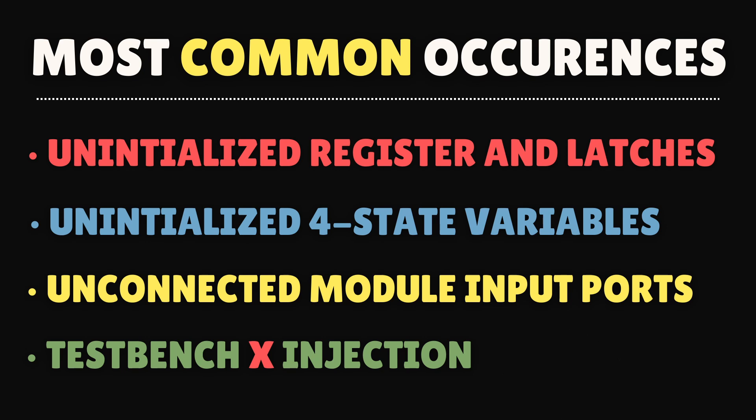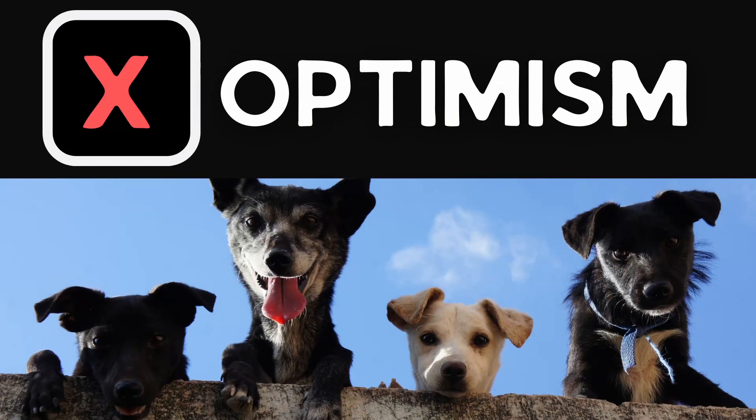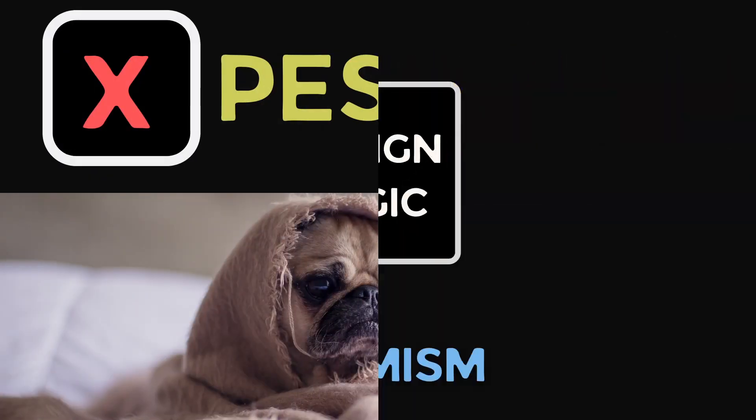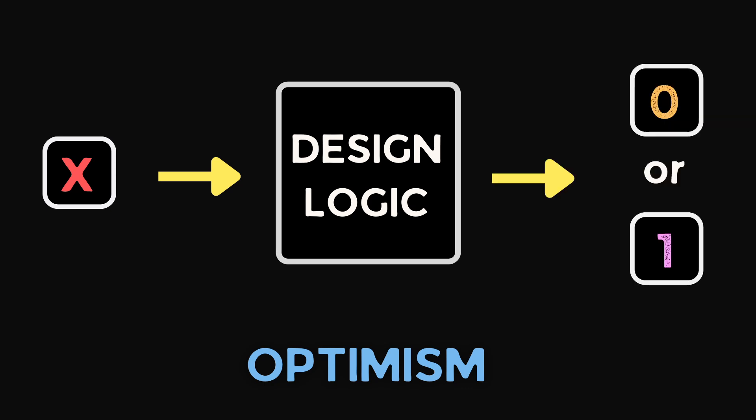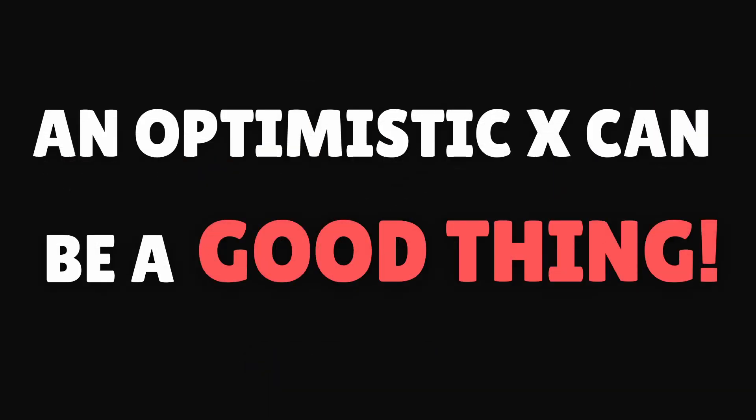So now our main concern is how the X value will propagate through the digital logic in RTL, whether it's optimistic way or pessimistic way. In simulation, X optimism is considered as when there is some uncertainty at input in design or logic, the simulation comes up with a known result 0 or 1 instead of X. An optimistic X can be a good thing. It can accurately represent a silicon behavior under certain conditions.